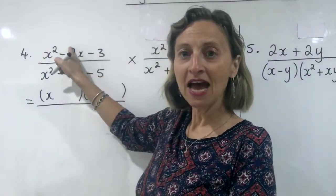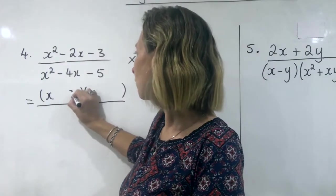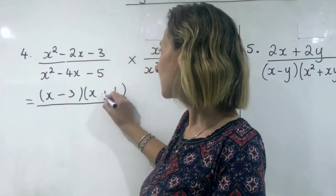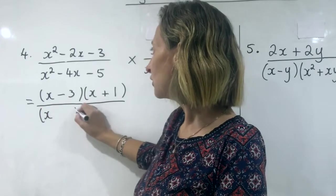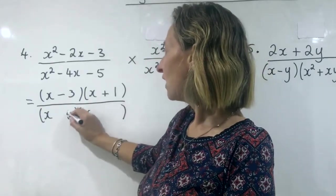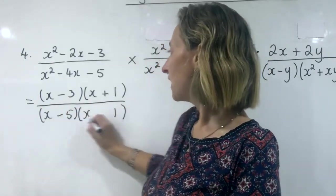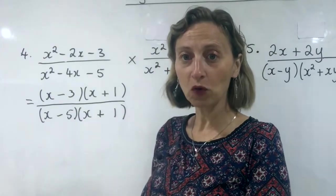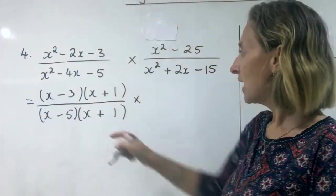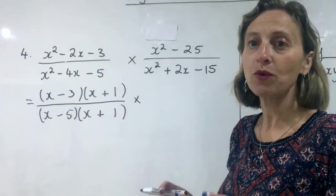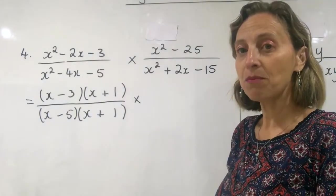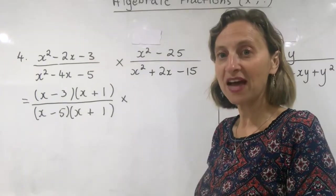Multiplies to give three, adds to give two — three and one: minus three, plus one. Then we do the denominator: five times one is five, minus five plus one is minus four. Just leave that for the moment. We want to stick with doing one thing at a time — at the moment we're factorising, not cancelling.